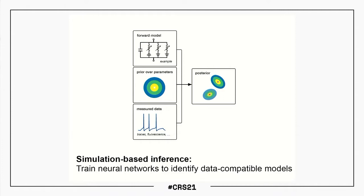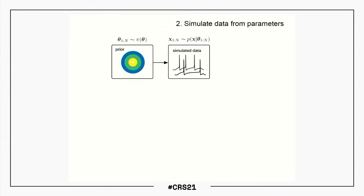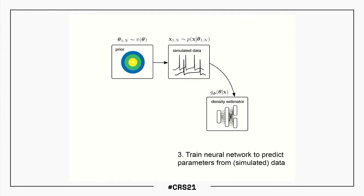Let me give you an intuition for how one of those algorithms can work. We start off by randomly generating parameters from our prior — that results in a lot of random parameters — and from these random parameters we can generate random data sets. That gives us a big lookup table of random parameters and random data sets generated by them. Once we've done that, this gives us a supervised learning problem by which we can train a neural network — in particular, a conditional density estimator that takes as input the simulated data and tries to predict the parameters that generated those simulated data.